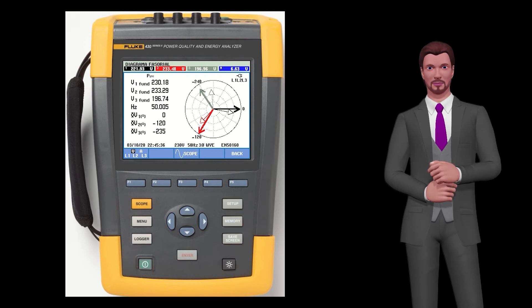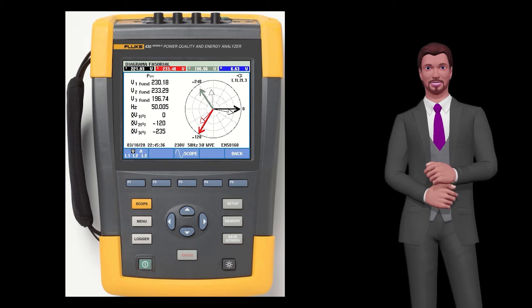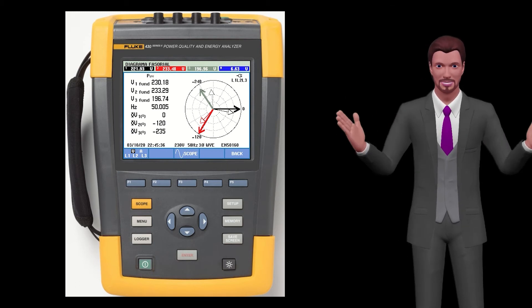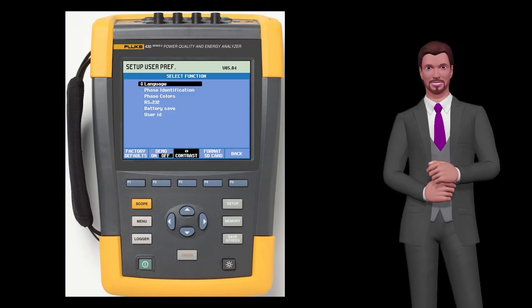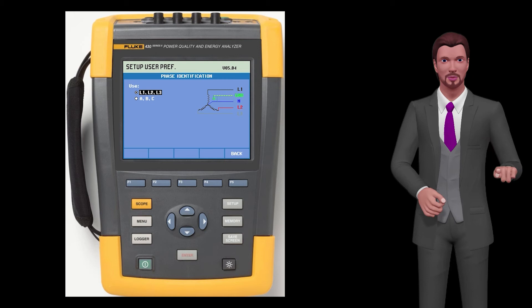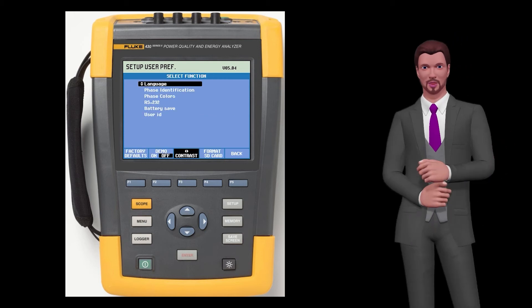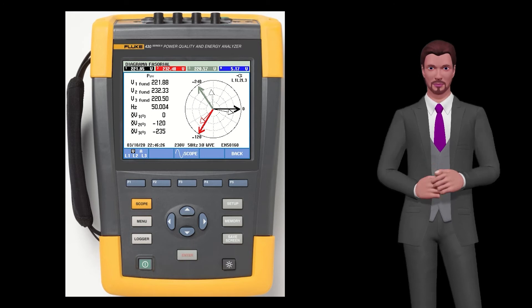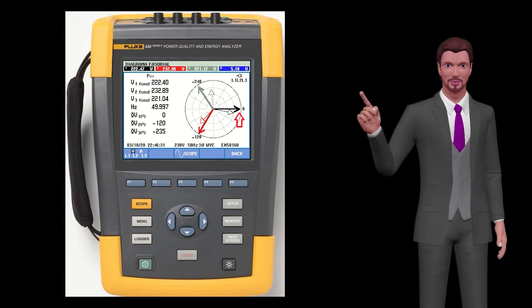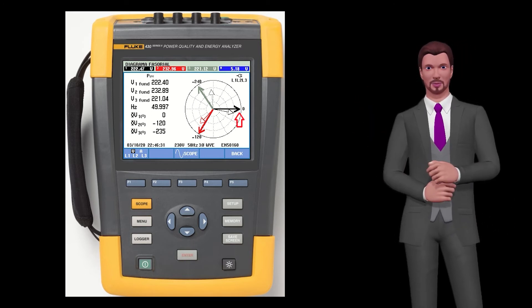In this diagram we can see the voltage phasors represented with thick arrows, and the current phasors represented with thinner arrows. The phasors associated with each phase will have a color according to the color system selected in the user preferences menu. If we imagine the phasor diagram as the face of a clock, the voltage phasor of phase one is taken as a reference and it is oriented at three o'clock.